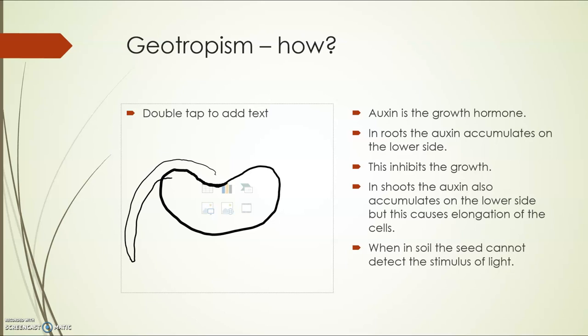Now what auxin does is it actually accumulates, so you'll get lots of it along this side here on the underside or lower side of the root. Now as it accumulates it actually does the opposite to what it does in the shoot. It inhibits the growth, which means that the cells at the top here are going to grow quicker and actually elongate, and that's why it can then bend downwards.